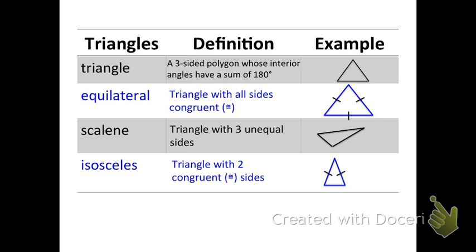On the first set of triangles, the acute, the obtuse, and the right triangles, they were all classified by using their angle measurements. The equilateral, the scalene, and the isosceles triangles have all been classified by using side measurements. Equilateral, all are congruent. Scalene, none are congruent. Isosceles, two are congruent. Okay? And we're talking about the side measurements.